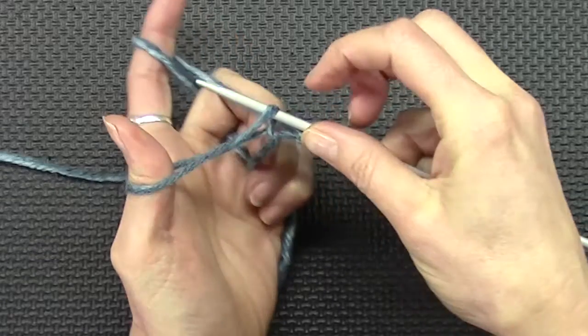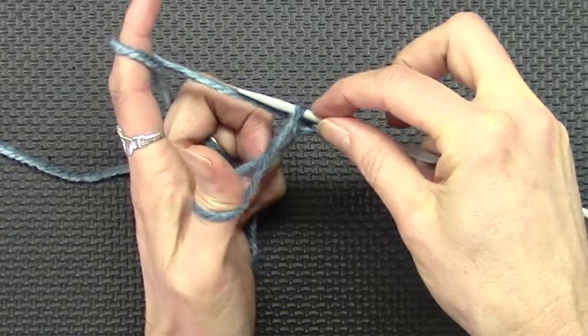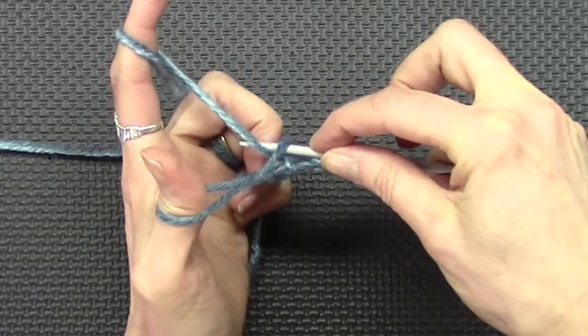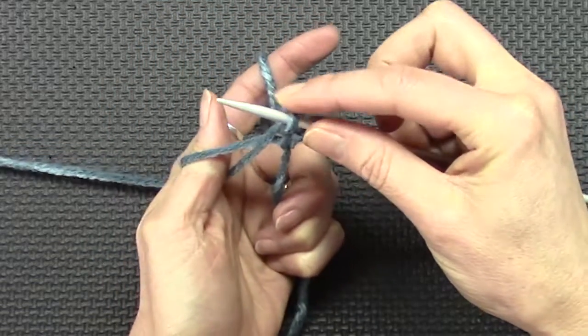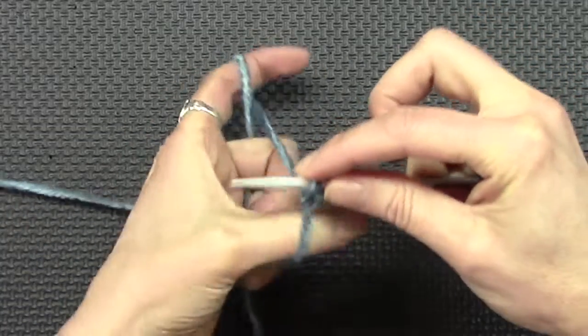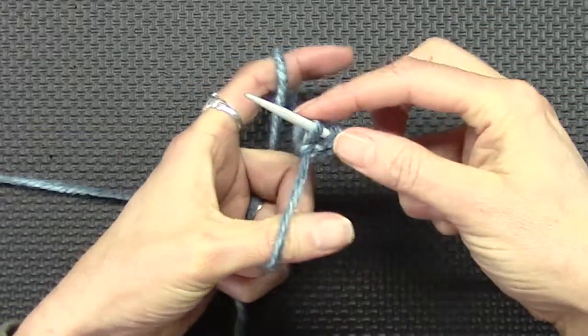That's where you're going to pull the yarn through. So grab the upper yarn and pull it through that hole. And pull it down. There's your fourth stitch.